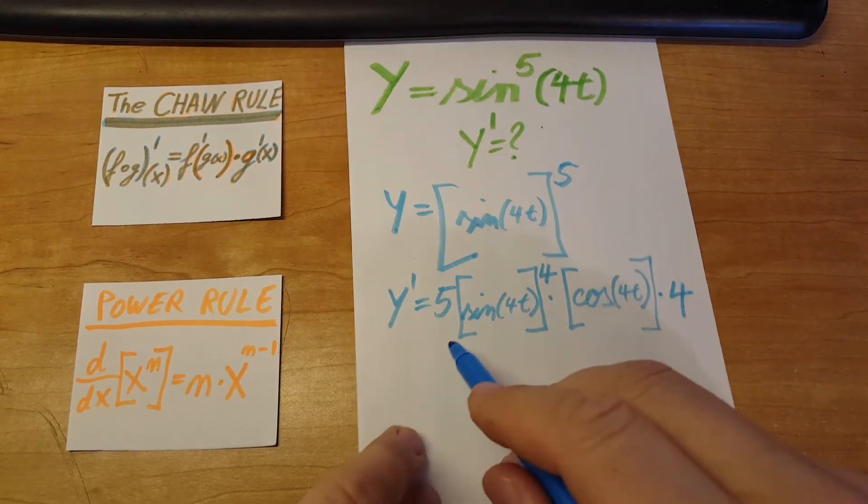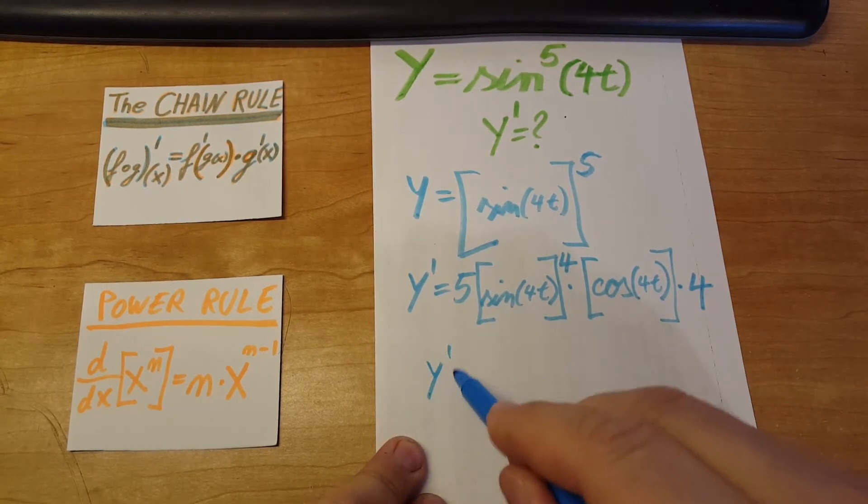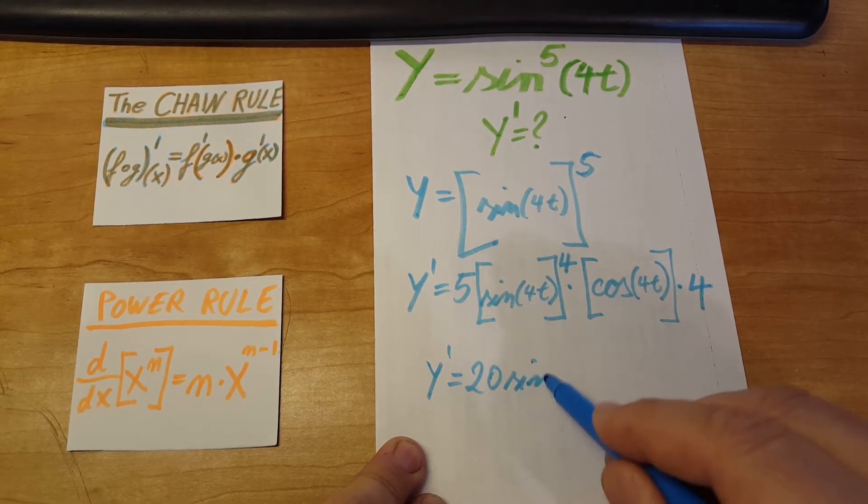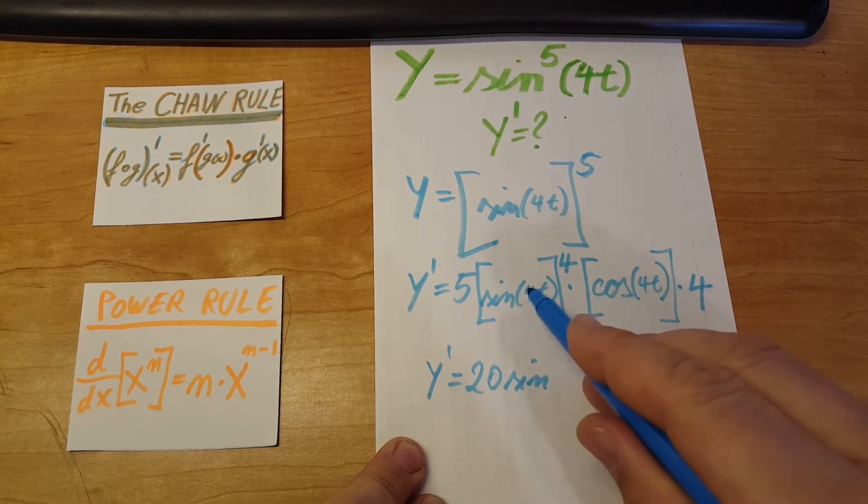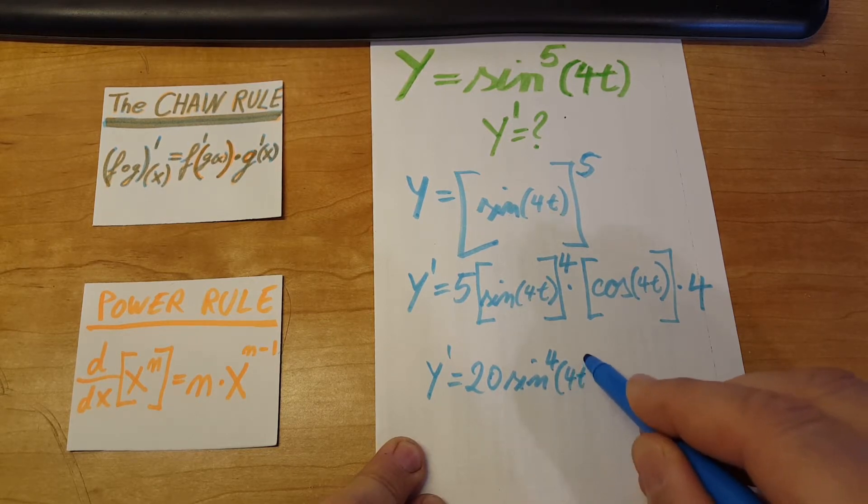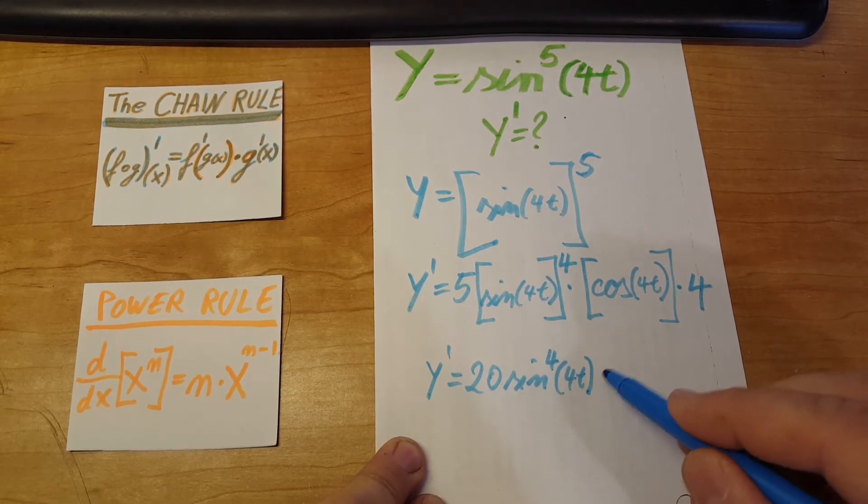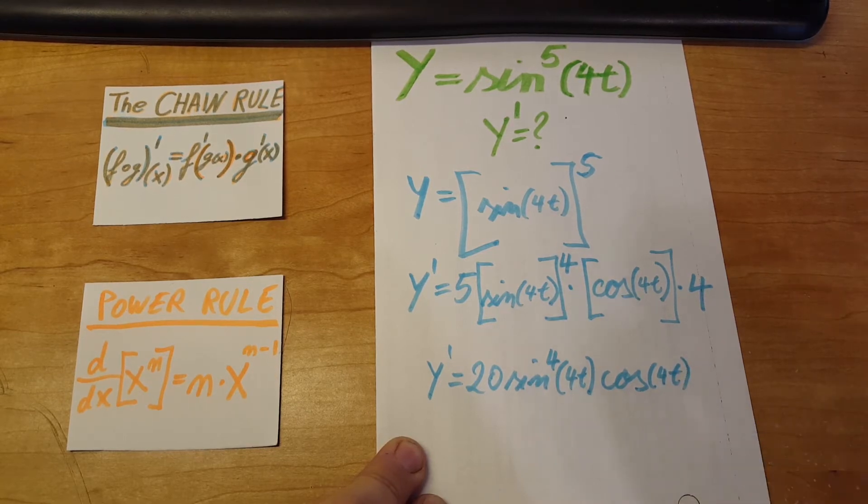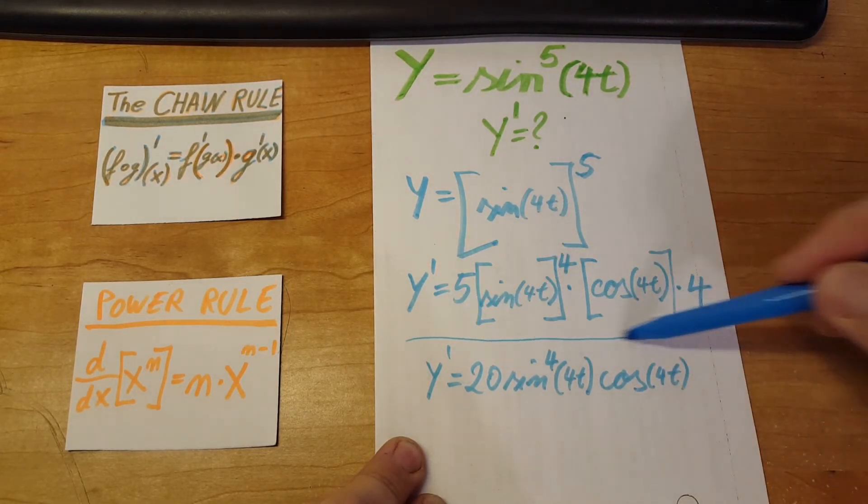Let's rewrite it in prettier form. 20 times sine, let's bring this back in, to the power of 4, 4t, times cosine of 4t. There you go, that is the answer.